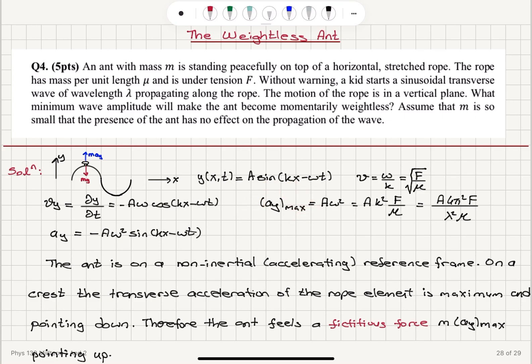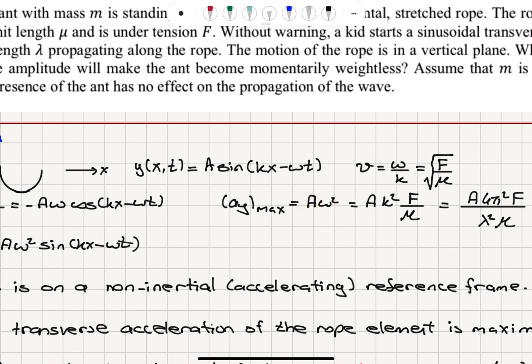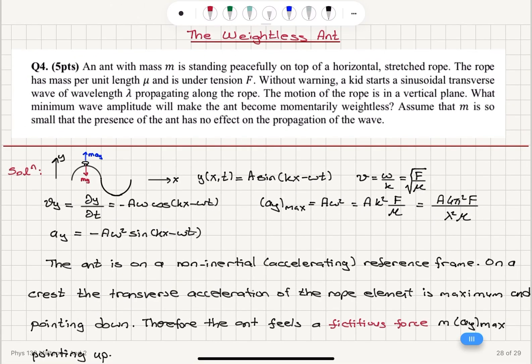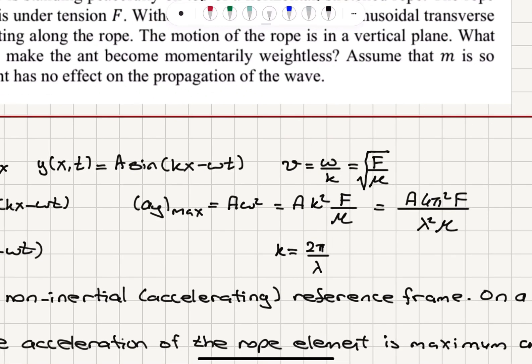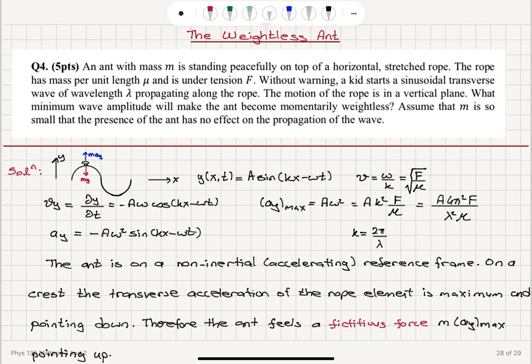So we can see that maximum acceleration is A ω², which is A k² v², which is f over μ. So we have k is equal to 2π over λ, that's the wave number 2π over λ. So we have 4π² over λ² times f over μ times A.